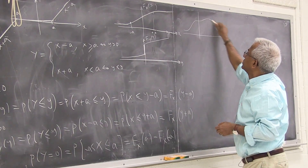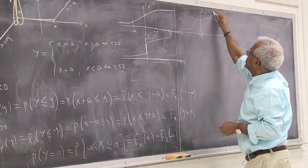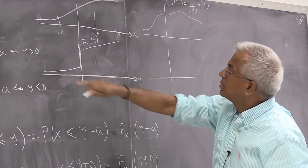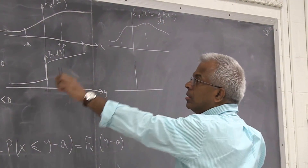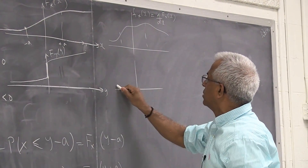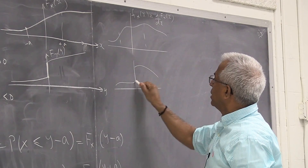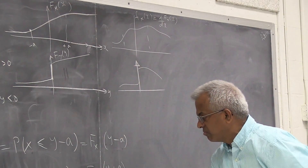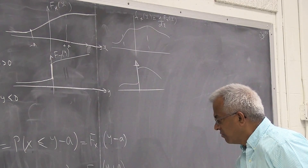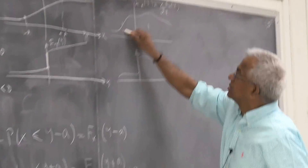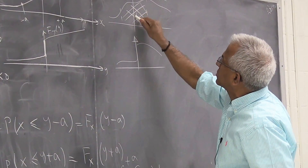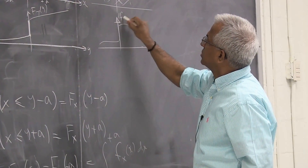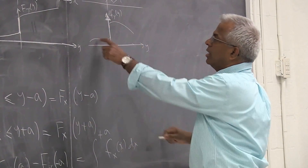The density function is the derivative of the distribution function. Given the shape of F_Y(y), the density function has the shape that is the derivative of F_X on the left and right sides, and there is an impulse at y = 0. The impulse magnitude is F_X(a) - F_X(-a), which equals the integral from -a to +a of f_X(x) dx. So f_Y(y) consists of the derivative parts plus an impulse delta function at zero with that coefficient.